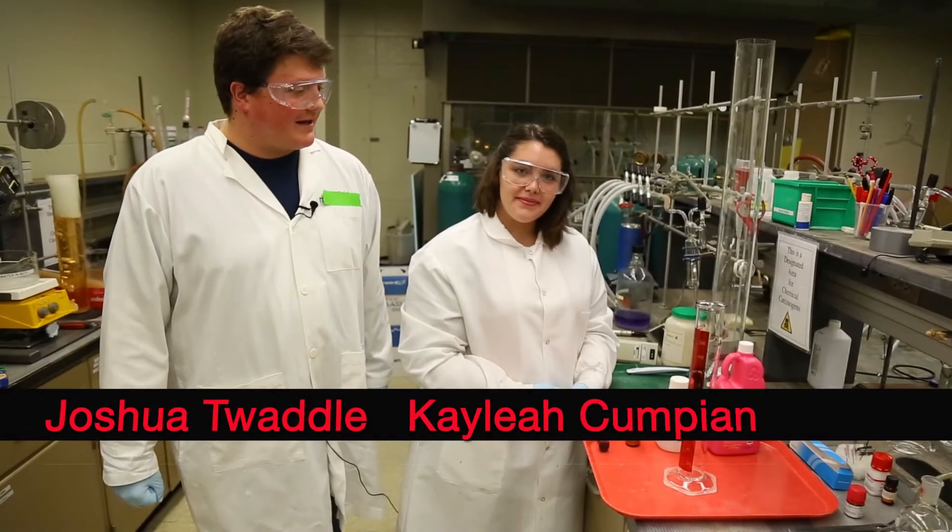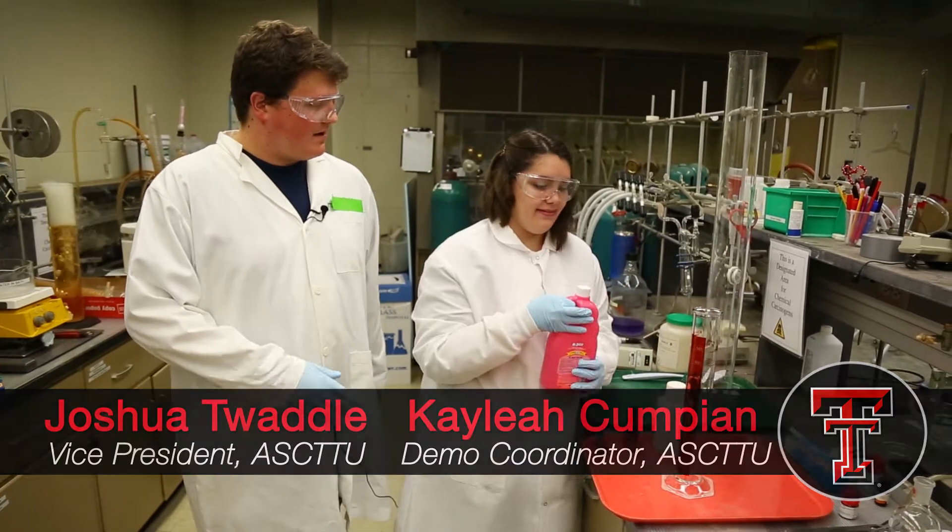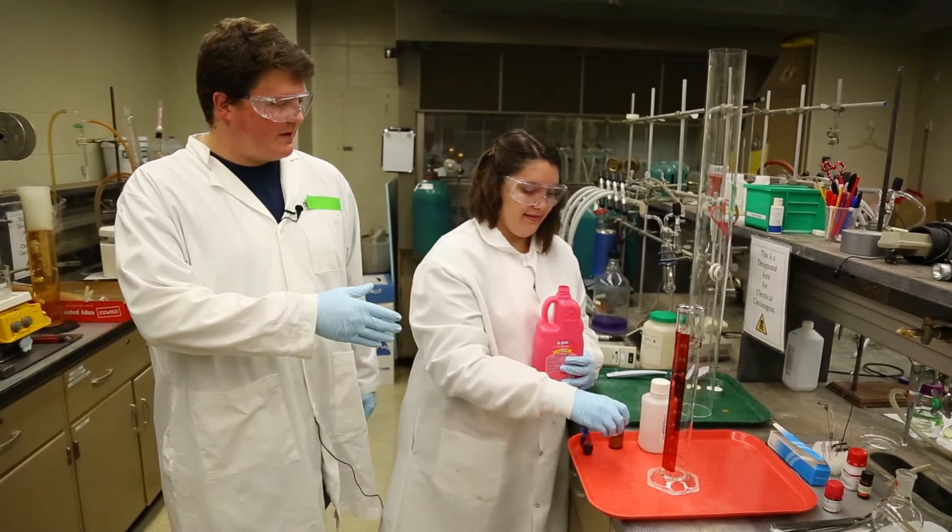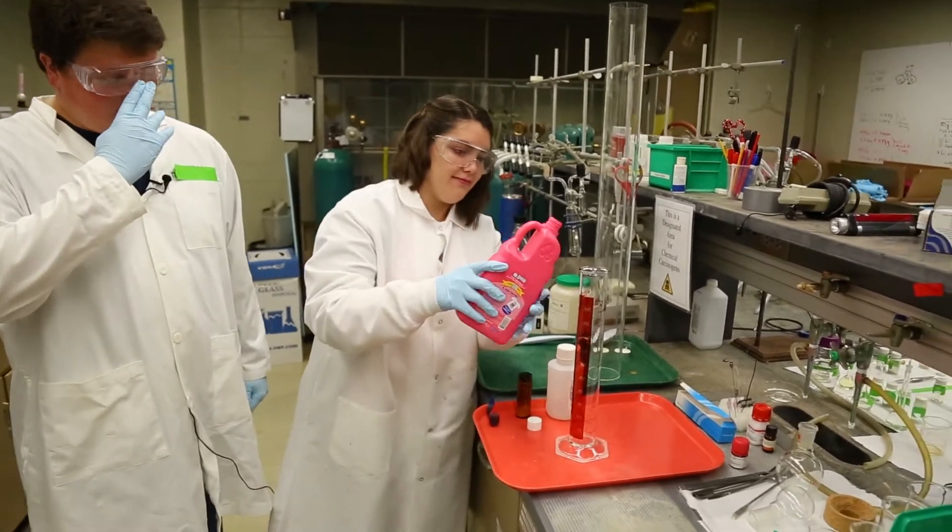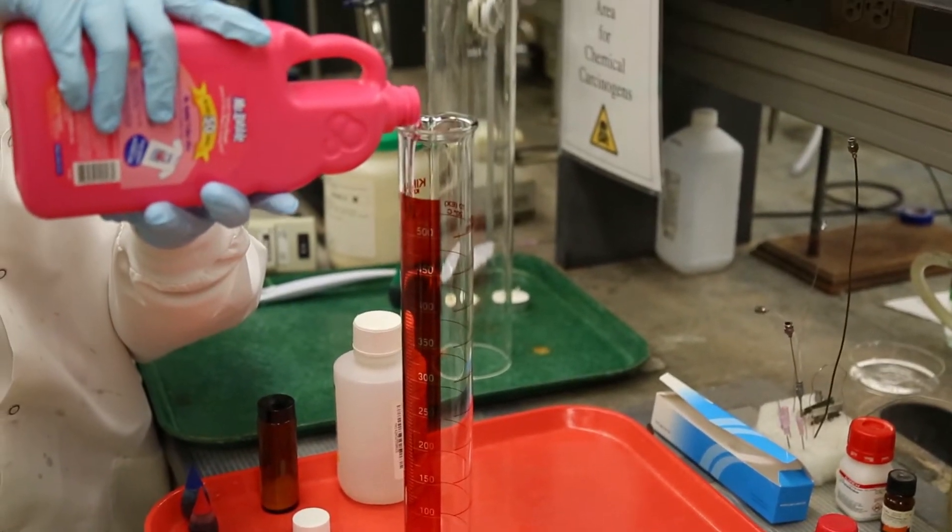So the reaction we'll be performing is called elephant toothpaste. And so what we're going to do is we're going to take Mr. Bubble bubble soap and we're going to put that into the graduated cylinder. And what we're going to try and perform is an oxidation reaction.